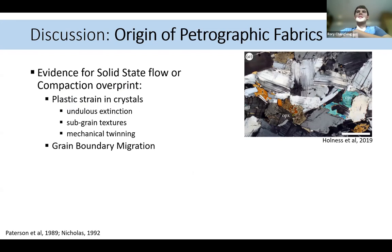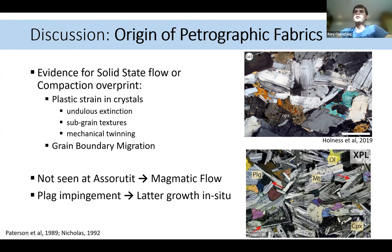So looking at the petrographic fabrics can give us an indication about what processes might have occurred. So this rock here is taken from another intrusion elsewhere, and we can see that we have evidence for solid state floor compaction overprinting. We have this undulose extinction and subgrain textures, mechanical twinning seen. And if we compare this to what we see at Assortutit, we don't see a lot of these textures. Generally the rock is a bit more pristine in terms of it's not being apparently deformed, and so this may indicate more of a magmatic flow occurring. We also see plagioclase impingement textures, which may indicate a later growing. So once these plagioclases have grown, they're then further growing in situ as well.